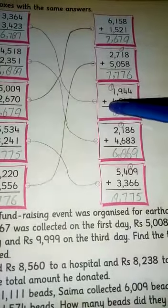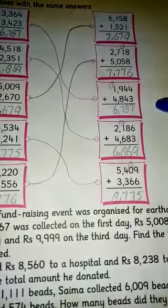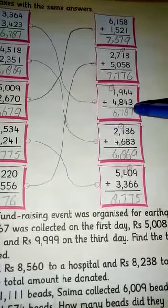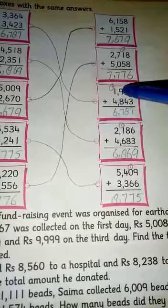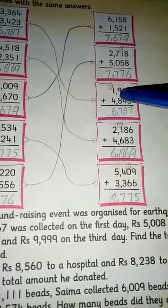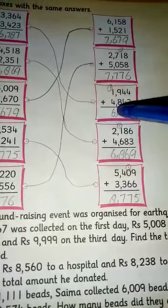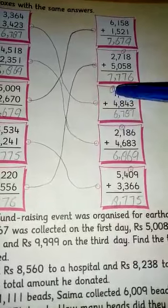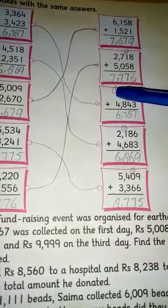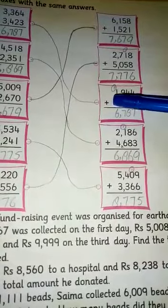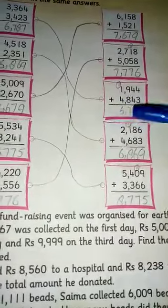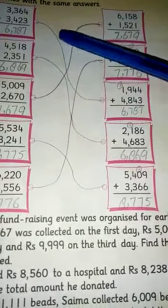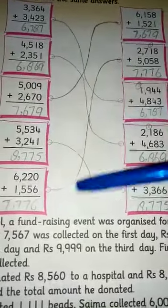4,944 plus 4,843. 4 plus 3 is 7, 4 plus 4 is 8, 9 plus 8 is 17, write 7 carry 1. 1 plus 4 plus 4 equals 9, giving 9,787. These are the same, we have matched them. You have to match the rest of your questions.